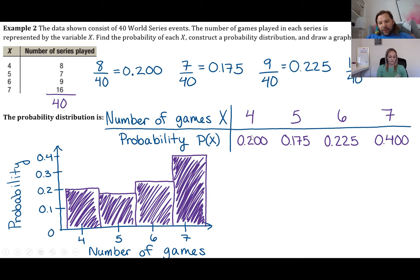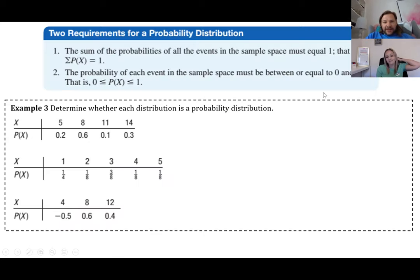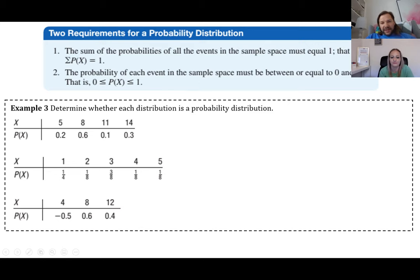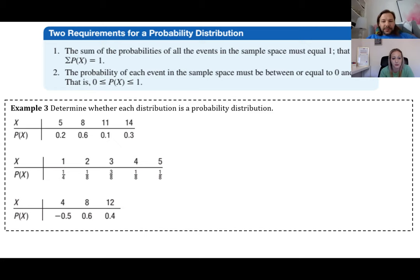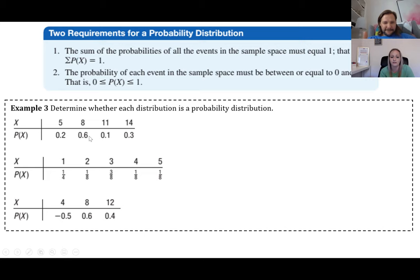There are two requirements for probability distributions: first, the sum of all probabilities must equal one — the sum of all P(x) values equals 1. Second, the probability of each event must be between zero and one. Let's use these two requirements to check three examples in example three.